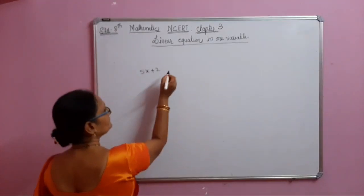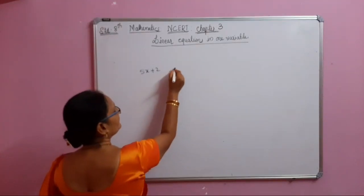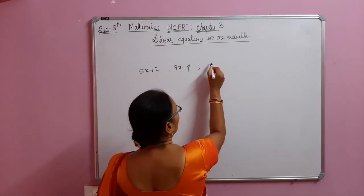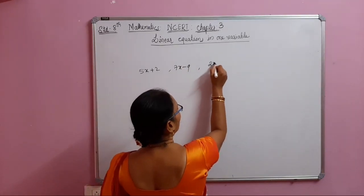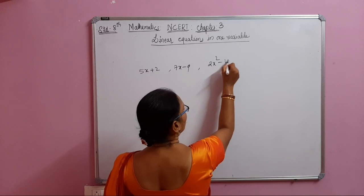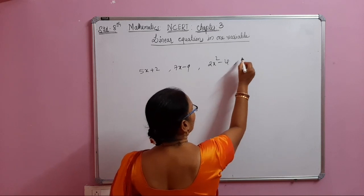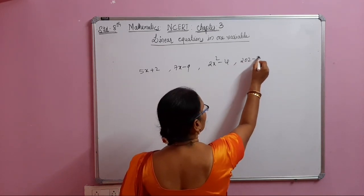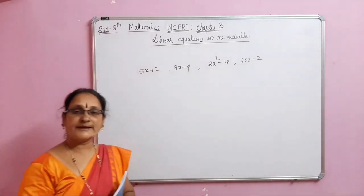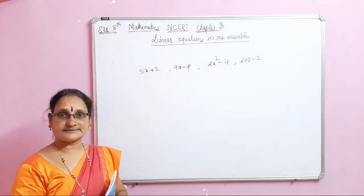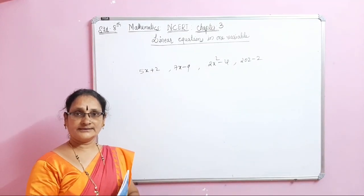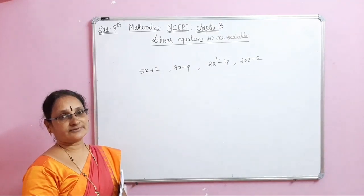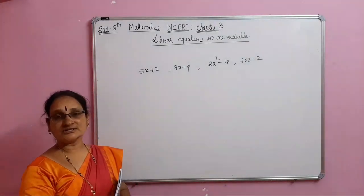For example: 5x plus 2, 7x minus 9, 2x minus 4, 20z minus 2 — these are all algebraic expressions.